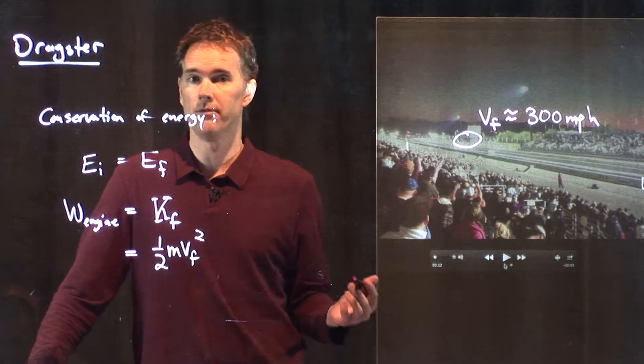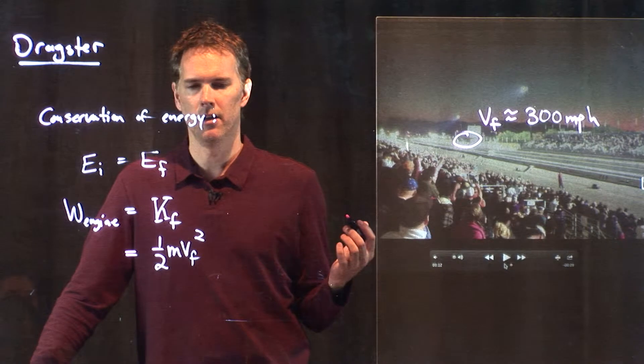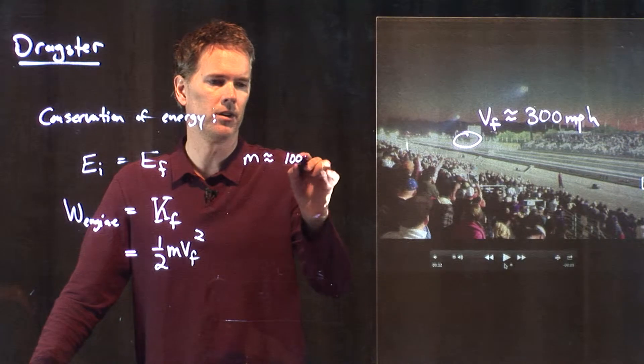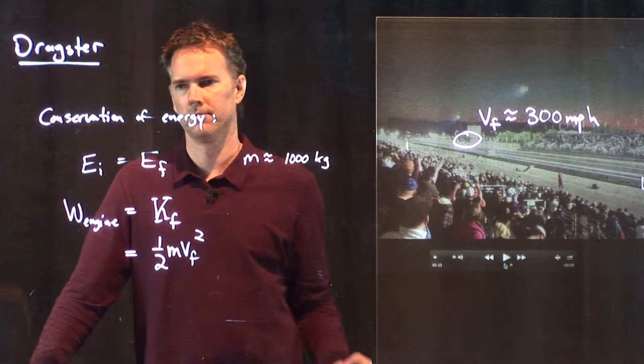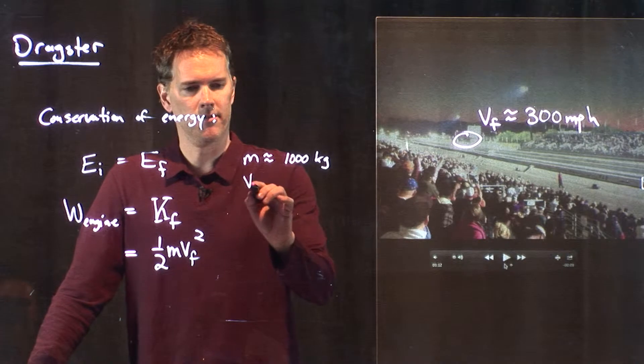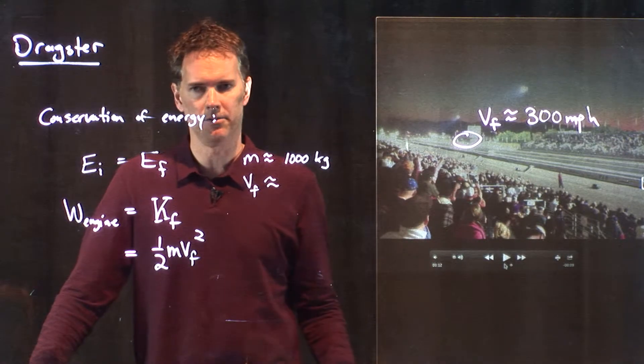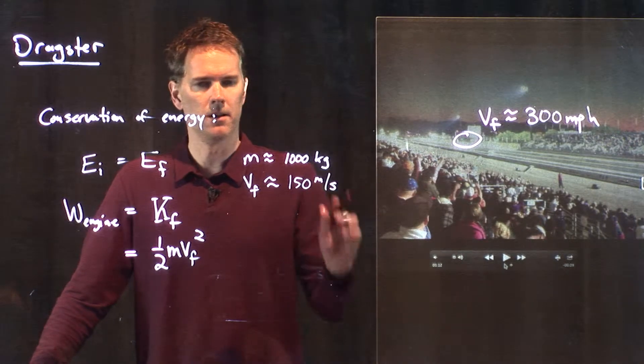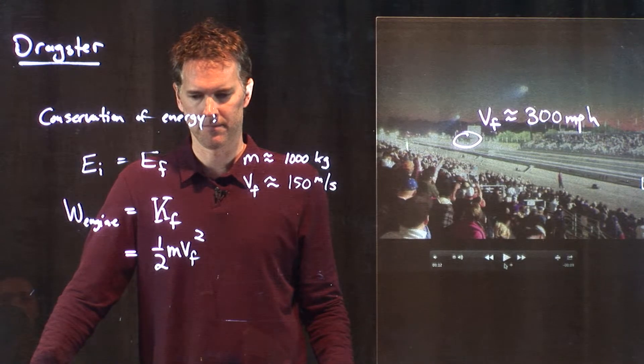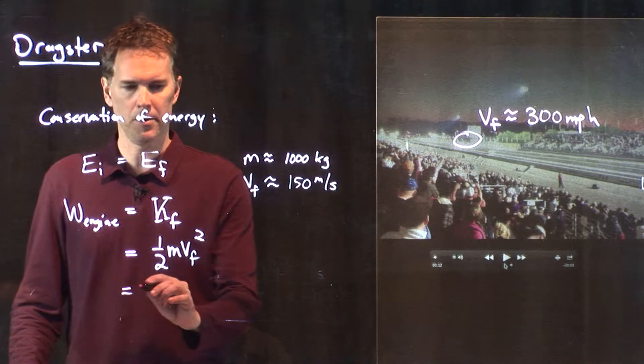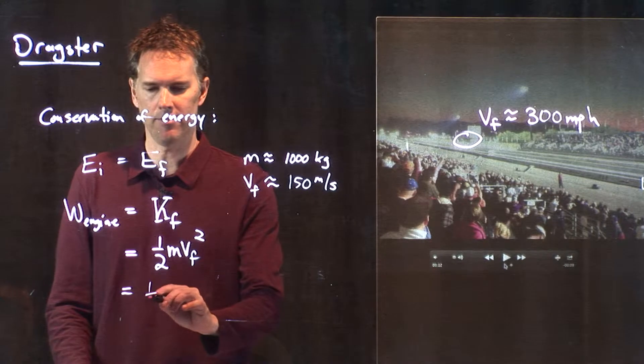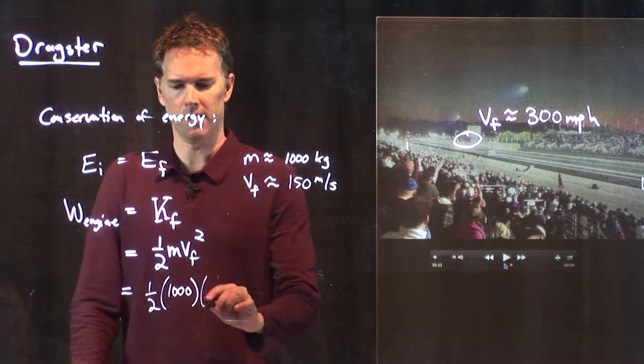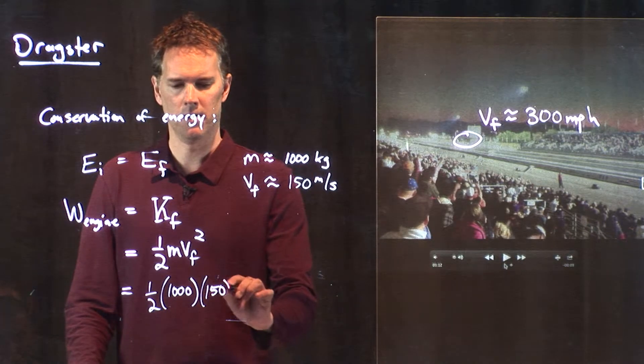And now, we can, in fact, plug in some real numbers. For a dragster, m is on the order of a thousand kilograms. Vf, we just said, was 300 miles per hour, which is on the order of 150 meters per second. So, let's plug in those numbers here and see what we get. We've got one half. M is a thousand kilograms. Vf, we said, is 150. We're going to square that.